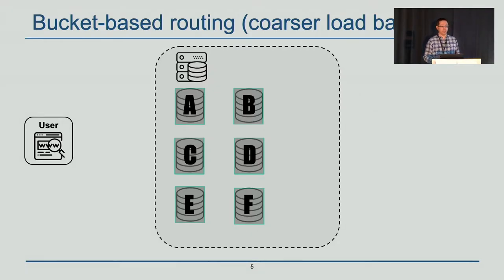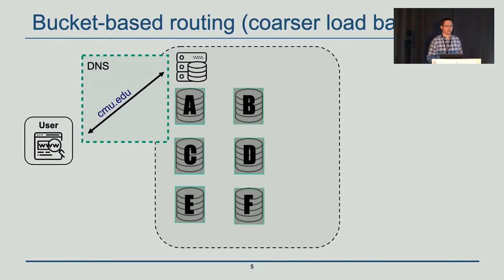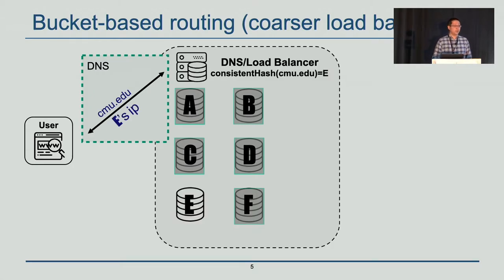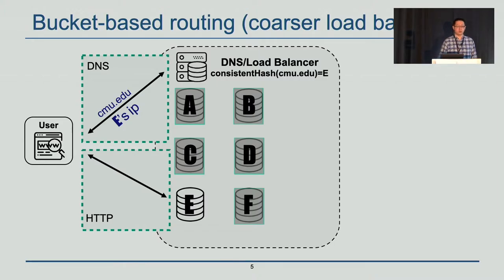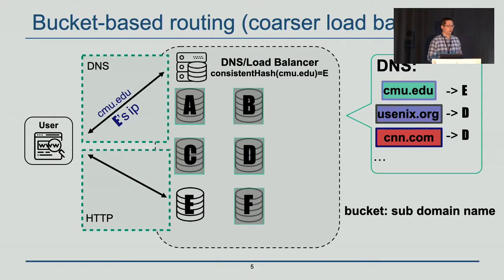To better understand how unavailability affects CDN performance, let's look at bucket-based routing. When a user tries to access an image from CMU.edu, the browser first sends a DNS request. DNS calculates consistent hashing on the domain name and finds out that server E is responsible for this bucket. Then it returns the IP of server E to the user, and the browser sends an HTTP request directly to server E. In CDN, load balancing is performed on the bucket level, where a bucket is usually a domain name or a subdomain name.